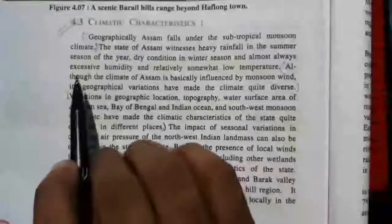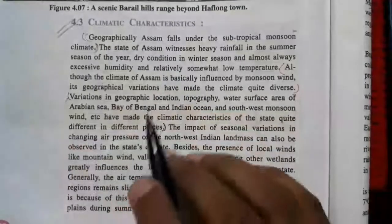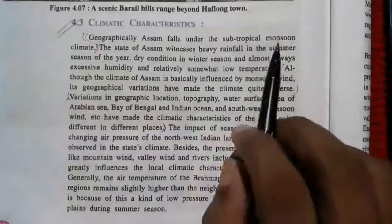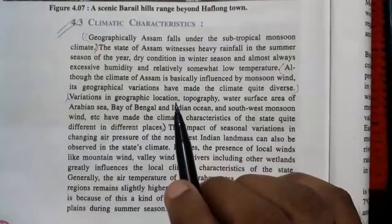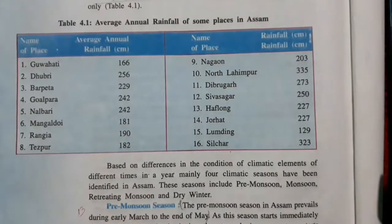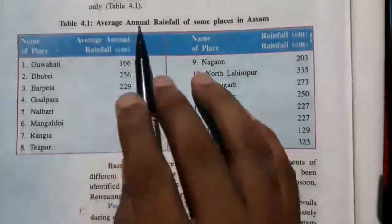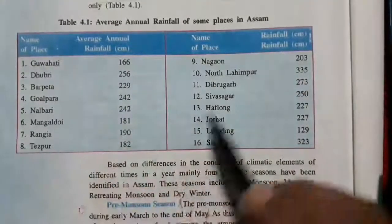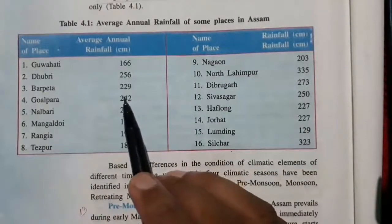Next are the climatic characteristics of Assam. Geographically, Assam falls under subtropical monsoon climate, which means there is a huge amount of rainfall. Assam witnesses heavy rainfall in summer and dry conditions in winter, with almost always excessive humidity. The subtropical monsoon climate is very helpful for growing paddy and other agricultural crops. Assam receives heavy rainfall because the Bay of Bengal is nearby and heavy rain clouds come from there. The average annual rainfall varies across different districts of Assam.